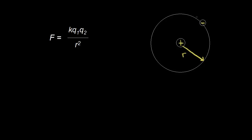Going back to the electron, let's say the electron is going around counterclockwise, and so the velocity of that electron at this point is tangent to the circle — that's the direction of the velocity vector. The electron has mass m and is going to feel a force. It's going to be attracted to the nucleus, since opposite charges attract, so this negatively charged electron will feel a force towards the center of the circle. That's a centripetal force — in this case, the electric force causing the electron to move in a circle.